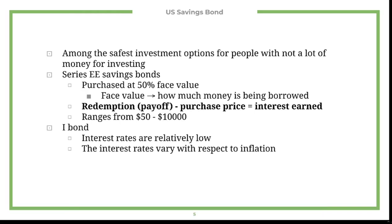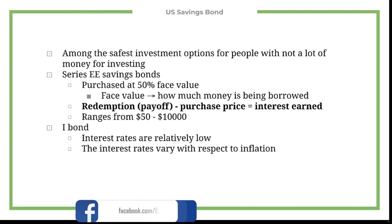With Series EE savings bonds, you purchase them at 50% of their face value — or 50% of the money that's being borrowed — and then the redemption, which is how much you're paid back minus the purchase price, is your interest earned.